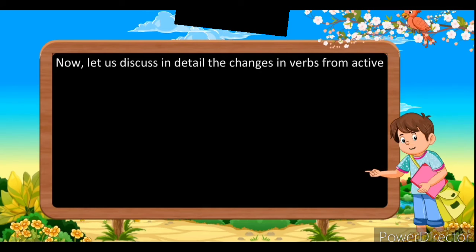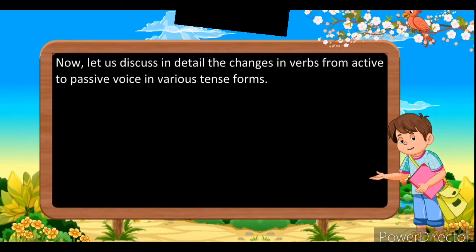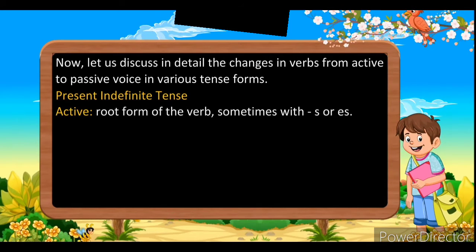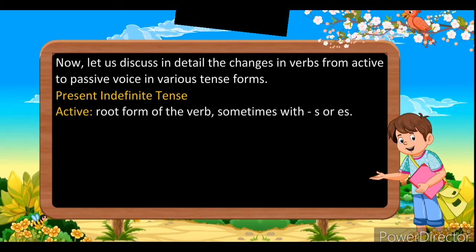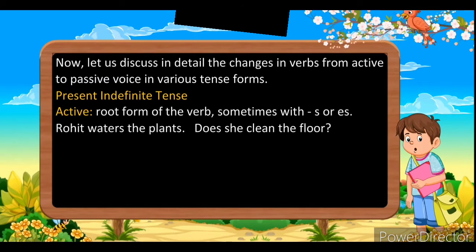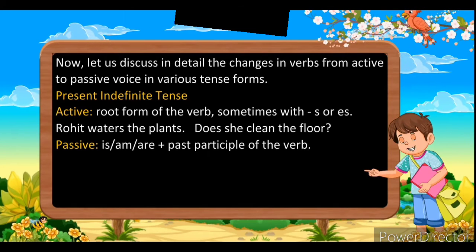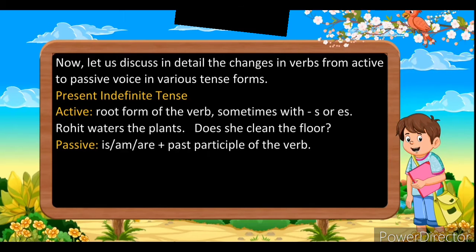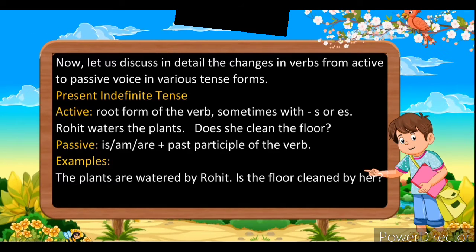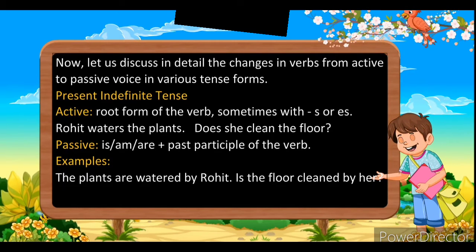Now let's discuss the changes in verb from active to passive voice in various tenses. If the sentence is in present indefinite — that is, present simple tense — in active voice, use the root form of the verb plus 'es' or 's'. For example: 'Rohit waters the plant'; 'Does she clean the floor?' To change to passive, use is/am/are plus the verb's third form. Examples: 'The plants are watered by Rohit'; 'Is the floor cleaned by her?'